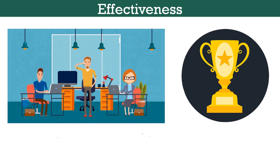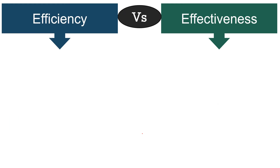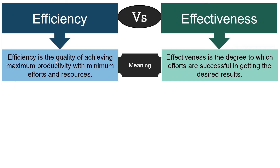Moving on to the differences between efficiency and effectiveness. Efficiency is the quality of achieving maximum productivity with minimum efforts and resources. Effectiveness is the degree to which efforts are successful in getting the desired results. We could say that efficiency is the ability to produce maximum output with limited resources, while effectiveness is the degree of closeness of the actual outcome with the planned outcome.